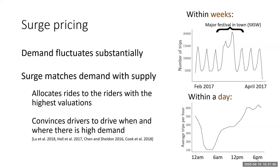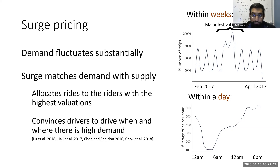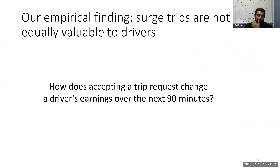One way to think about surge pricing is you want to allocate rides to riders with the highest valuations, and also convince drivers to drive when and where there's high demand. This is well understood in standard economics—so what's the point of this part of the talk? I'll motivate it by spoiling half our empirical finding: I'll show how accepting a given trip request changes a driver's earnings over the next 90 minutes. So not just the earnings during the trip, but also afterward. The y-axis is the increase or decrease in earnings from accepting the trip; the x-axis is the surge factor—a multiplier like 2x meaning trips are twice as expensive as normal.